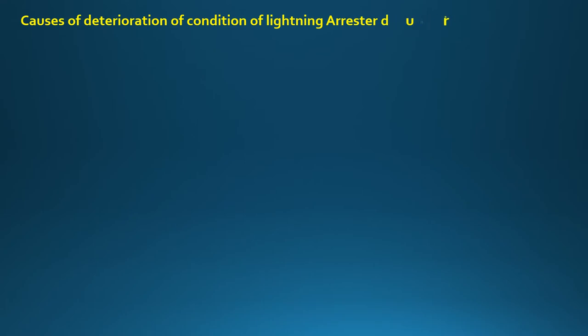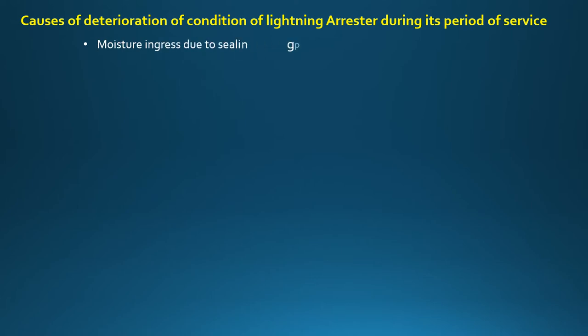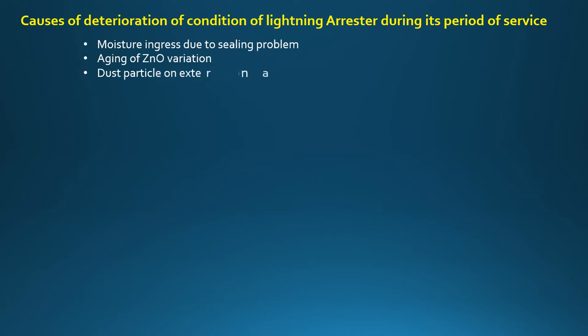The causes of deterioration of a lightning arrester during its period of service include: moisture ingress due to sealing problems, aging of zinc oxide varistors, dust particles on the external surface, and cracks on the porcelain surface.